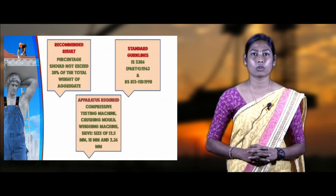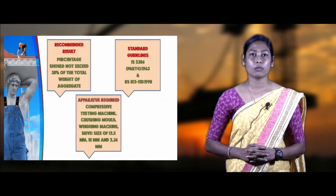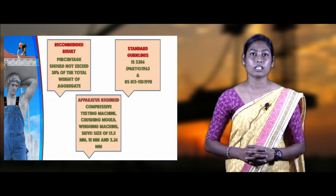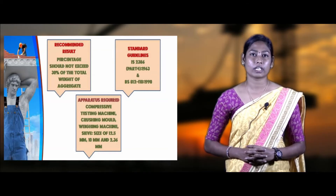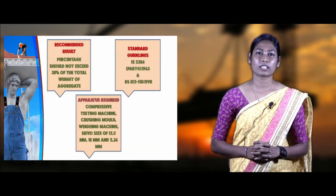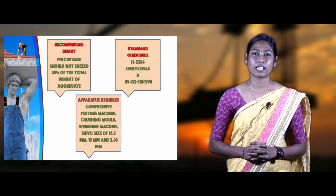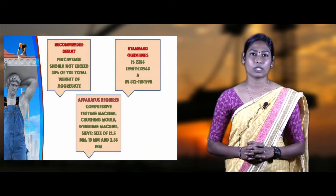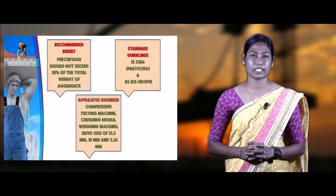The recommendation result of crushing strength: the value of crushing strength should not be more than 30% of the total weight of aggregate taken for the test. For road and pavement works, the crushing strength value should not be more than 30%. For other works, it may be permitted up to 45%. Standard guidelines used for crushing strength test are IS 2386 Part 4 (1963) and BIS 812-110 (1990).